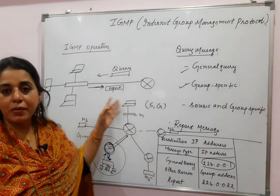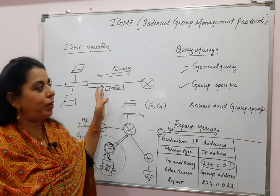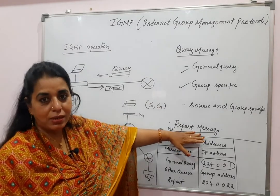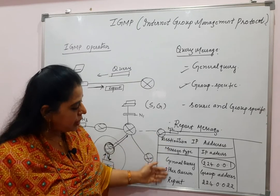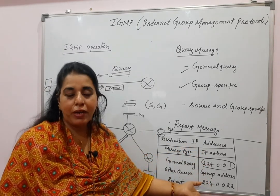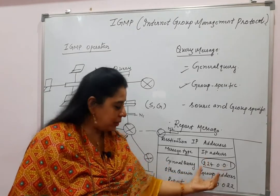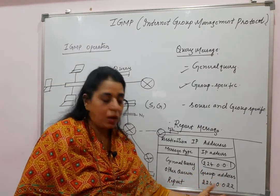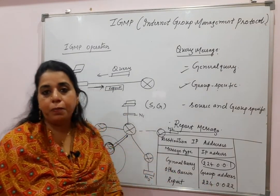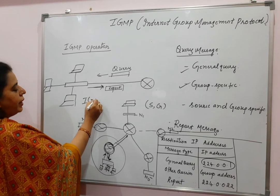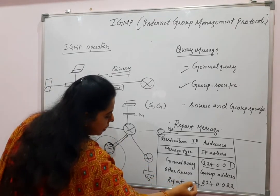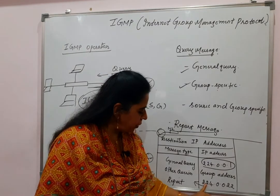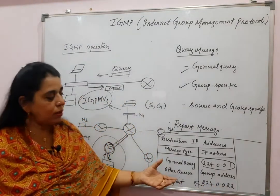A five-mark exam question could ask about the general operation, the three types of query messages, and the report message as the response. The multicast address 224.0.0.1 is used for the general query. For other queries, the group address is used as the destination. For the report, the address 224.0.0.22 is used because that is the multicast address assigned to IGMP version 3.